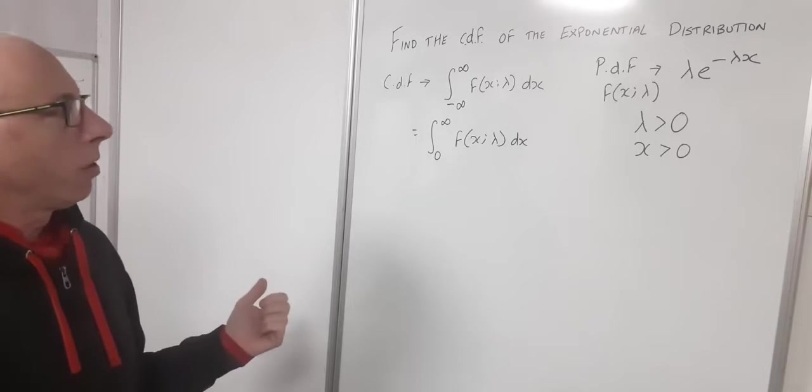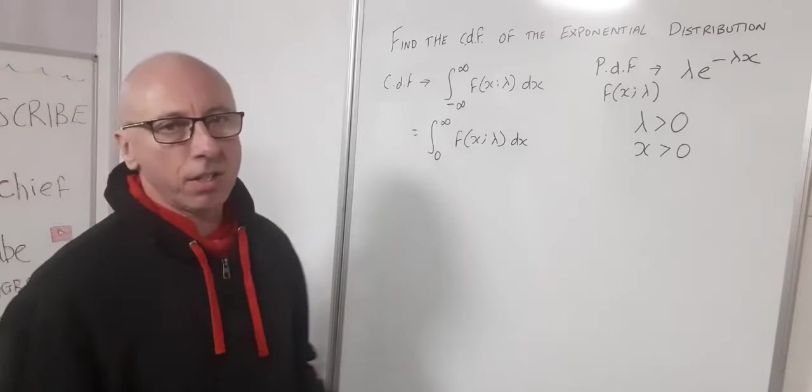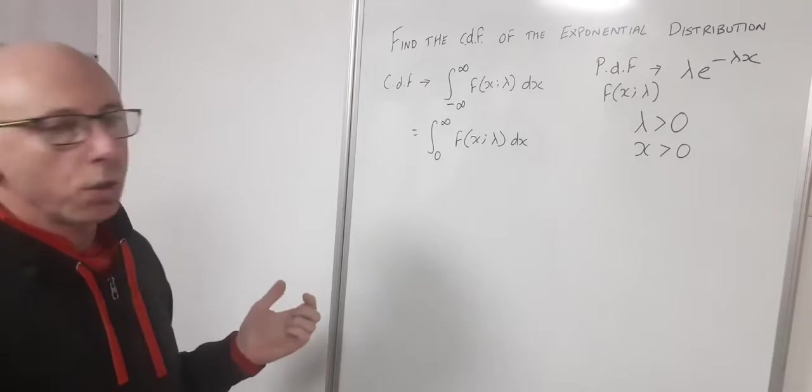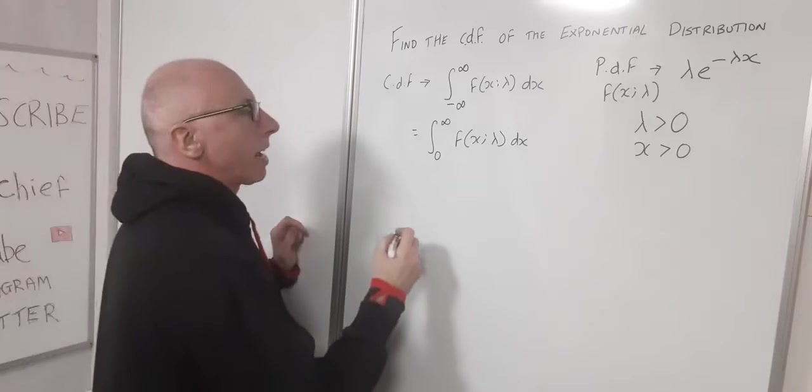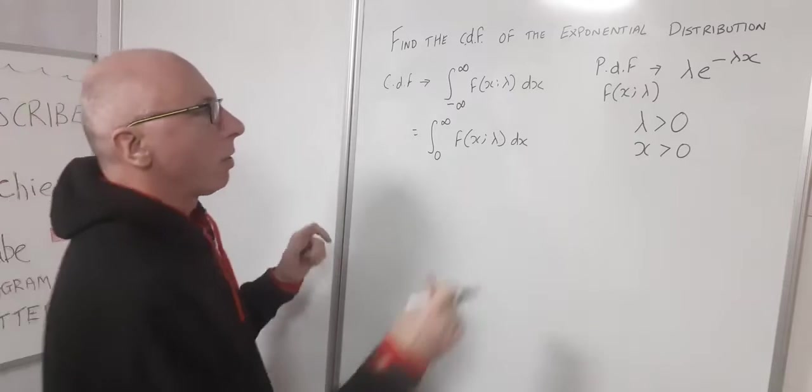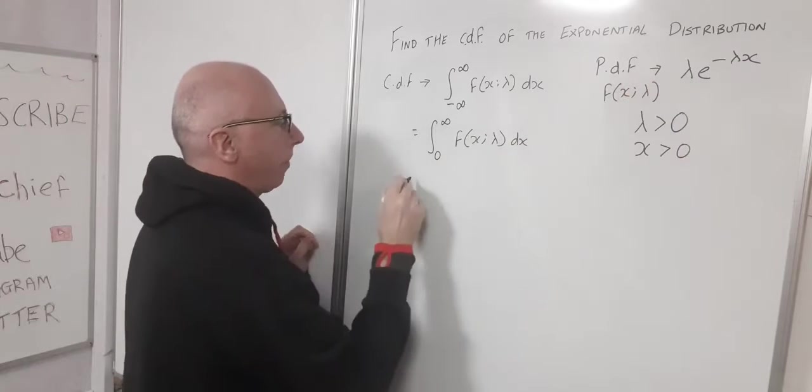Okay, now the way to integrate this to get our CDF is what we do now. We just introduce a dummy variable. In this case, I'm going to use t. So what we do is now, wherever there's an x, we substitute for t.